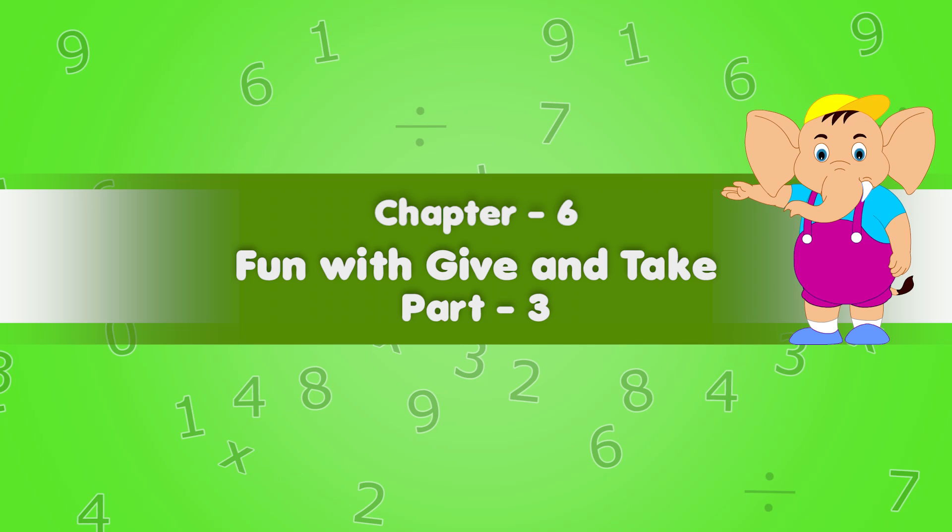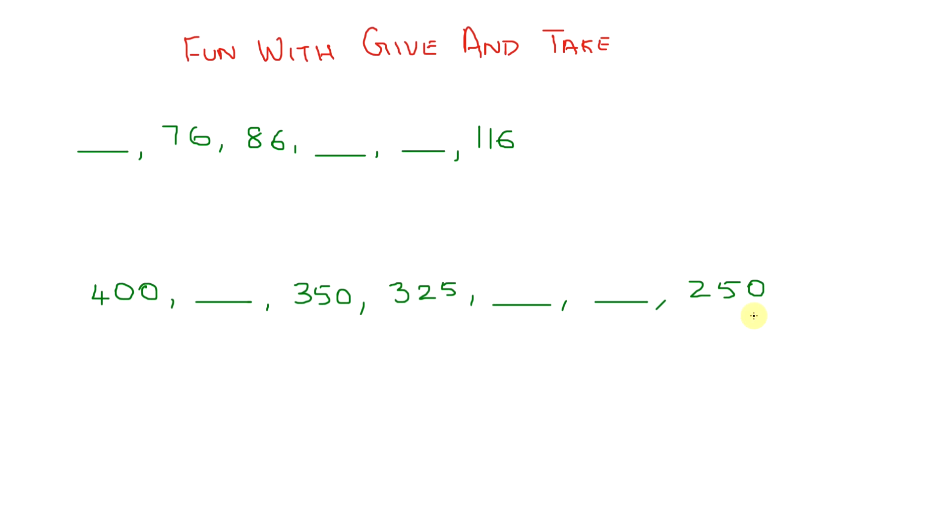Chapter six: fun with give and take. Let's brush up our skills on finding the missing numbers. We have blank, 76, 86, two blanks, and 116. What's the sequence here? It's a jump of every 10 numbers. So before 76 we should have 66, and after 86 comes 96, then 106, and then 116. Good.